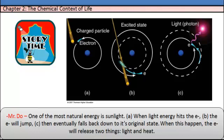One of the most natural energies is sunlight. A, when the light energy hits the electrons. B, the electron will jump. And then C, eventually falls back down to its original state. When this happens, the electron will release two things: light and heat.